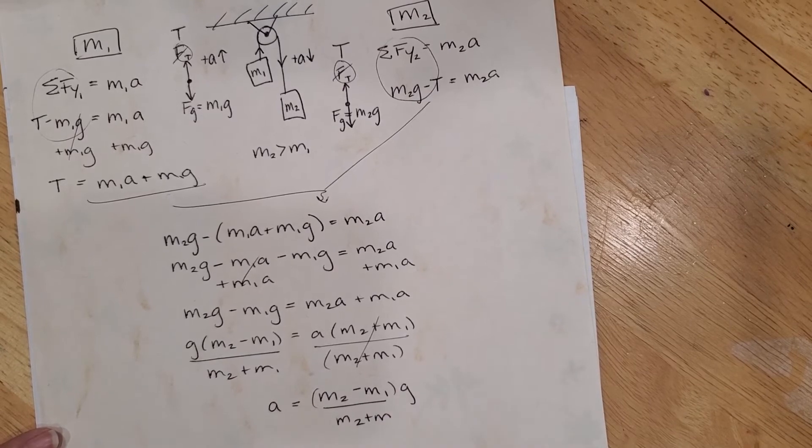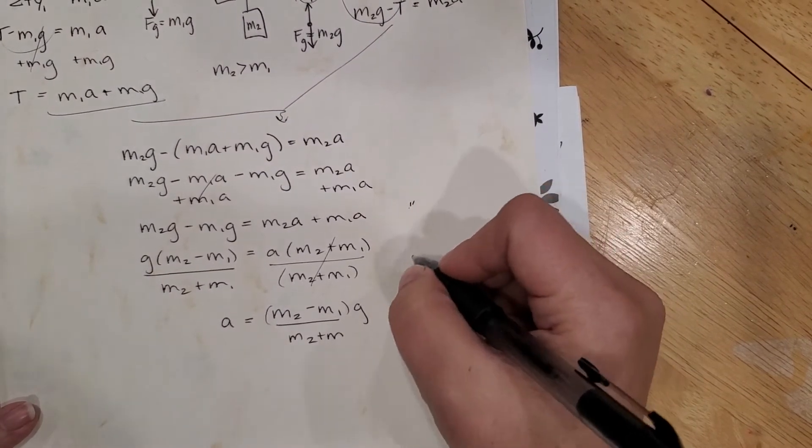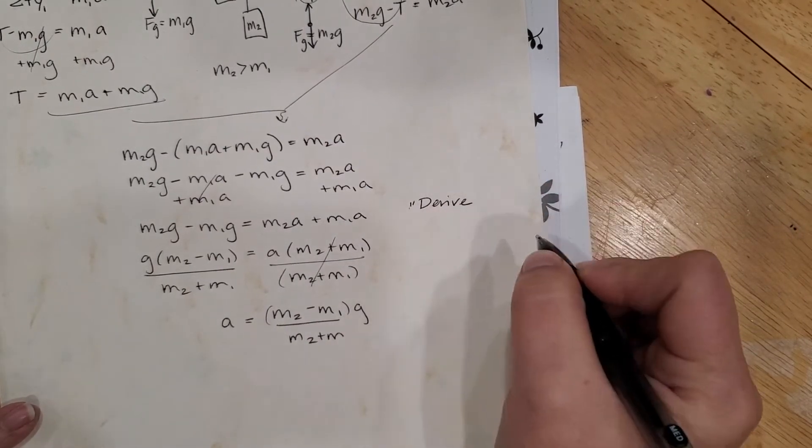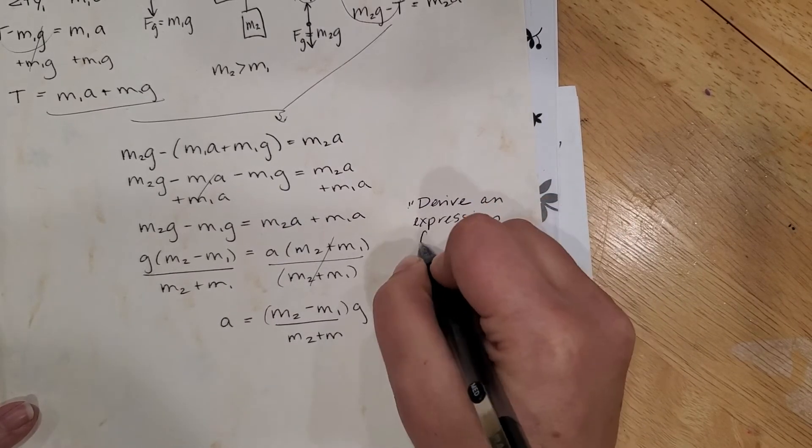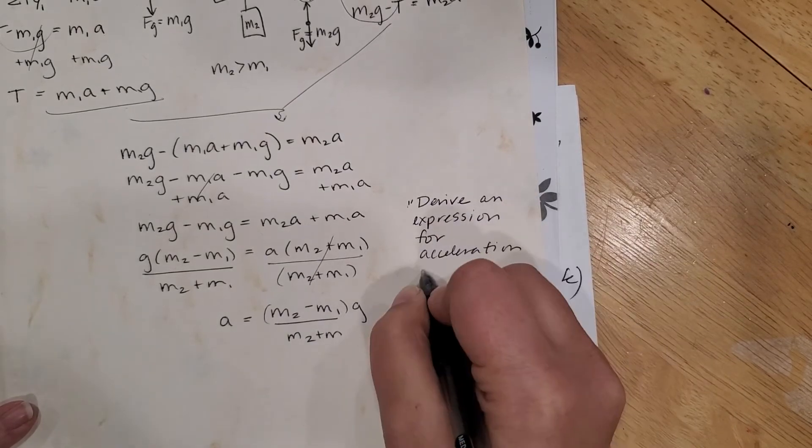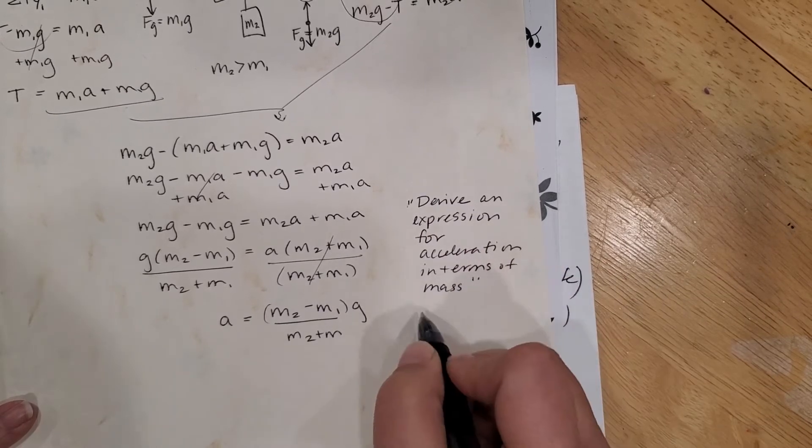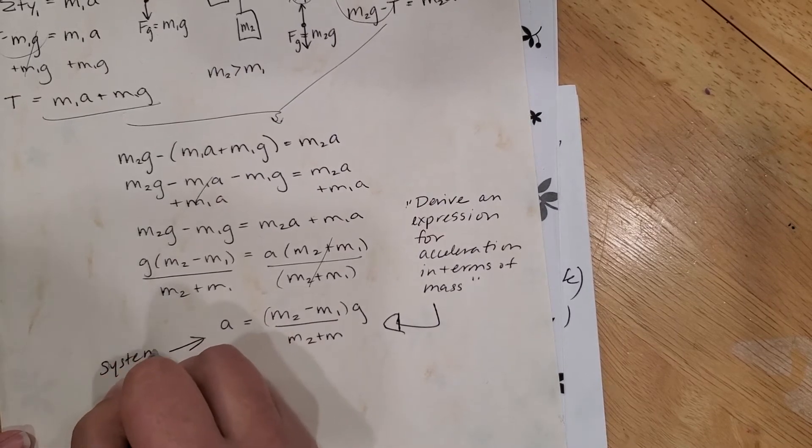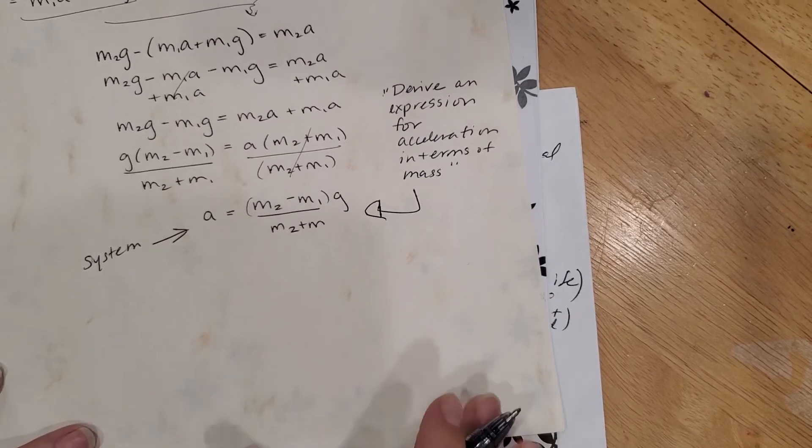All right so this is the answer. This is what they want you to do when you see derive an expression for acceleration in terms of mass. Those words mean do that and this is the acceleration of the system. Okay, so let's write down what I did.